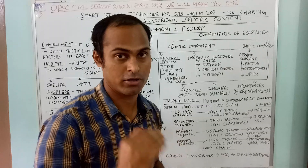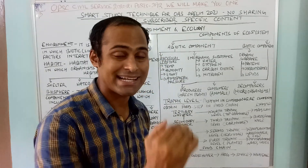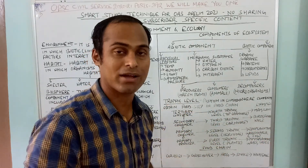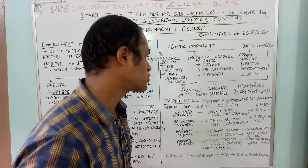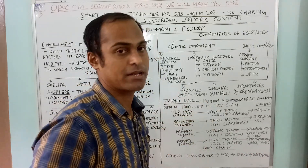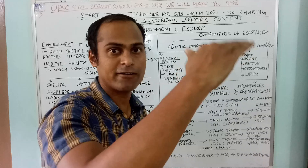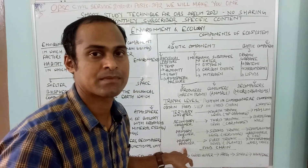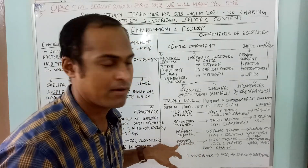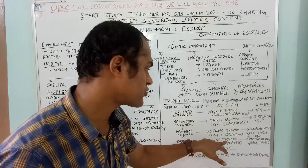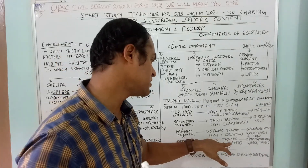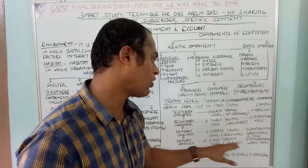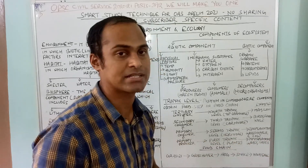A trophic level is the position in the ecosystem from where organisms obtain food — it is a step in the food chain. The first trophic level is the primary producer: plants and phytoplankton, such as phytoplankton, grass, and trees.